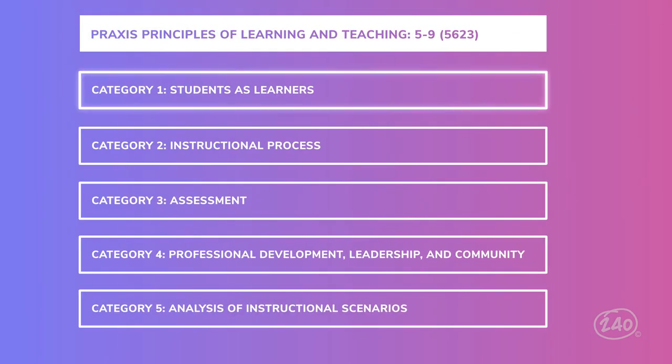Category 1 is worth 22.5% of your overall score, totaling approximately 21 Selected Response questions in all. You'll see questions about Student Development and Learning, Diverse Learners, and Motivation and the Learning Environment. Basically, it includes everything you need to know about your students and how to reach all of those teens and preteens in your classroom as an educator. This might seem daunting, but we'll go through it piece by piece, and later we'll tackle a few practice questions together.